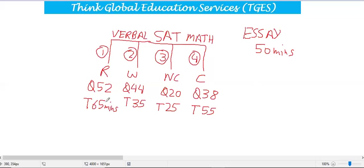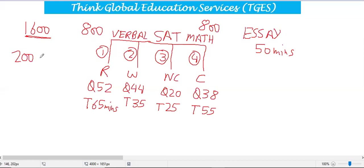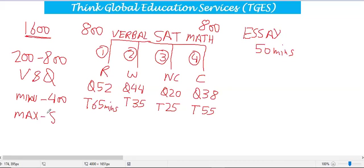The complete SAT score is out of 1600. It is 50% verbal and 50% quant — so 800 for verbal and 800 for quant. The scale varies from 200 to 800 for each section, meaning the minimum overall score is 400 and the maximum is 1600. The essay is judged separately.